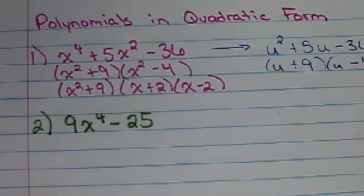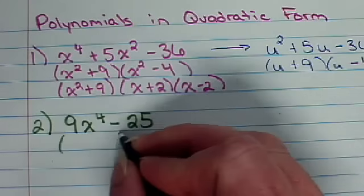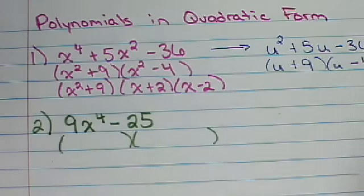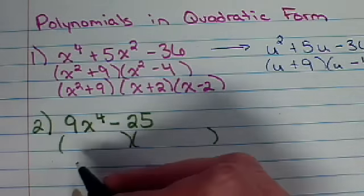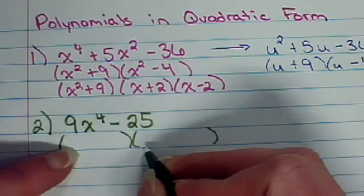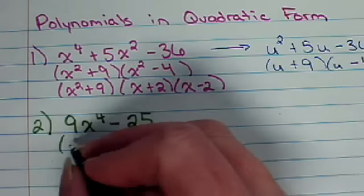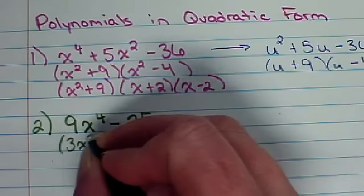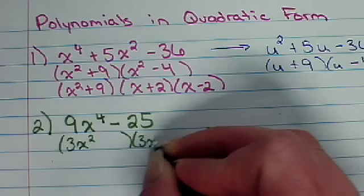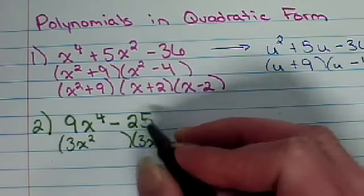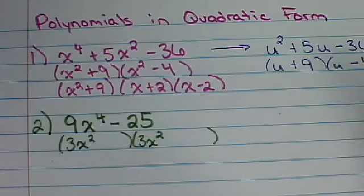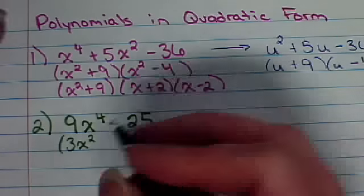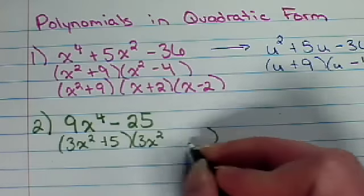Now, we could rewrite this one as 9u squared minus 25 and then go from there. But, I think if it's a difference of squares, it's just as easy to really think about it logically. What times itself gives me 9x to the fourth? Well, that's got to be 3x squared and 3x squared. What's going to multiply together to give me a negative 25 but add to be 0 since we have no middle term? Well, that's a 5 and a negative 5.